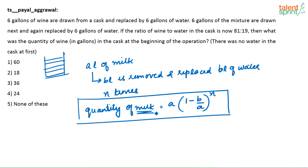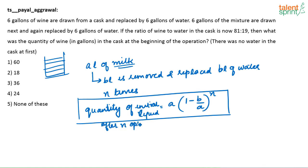It is not milk always — I have just taken milk and water because most of the time questions will be on milk and water. You can also take it as liquid A and liquid B, or wine and water. You can write it as the quantity of the initial liquid — whatever was there initially in the vessel — after N operations. Using this formula, if you solve this question, it is very, very easy to solve.